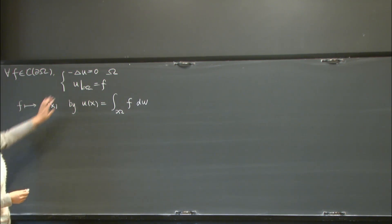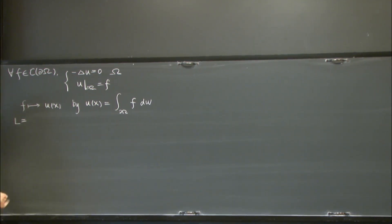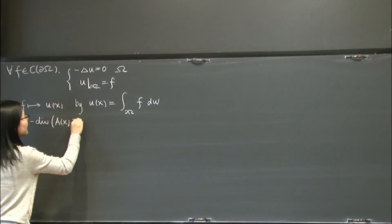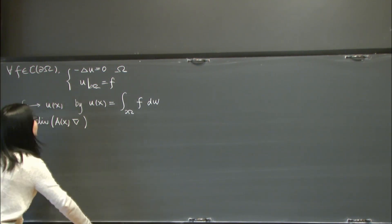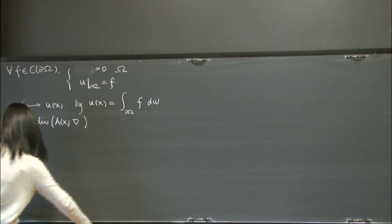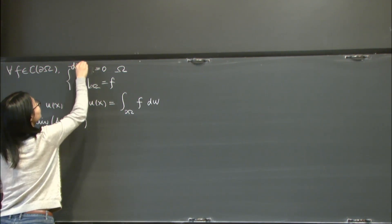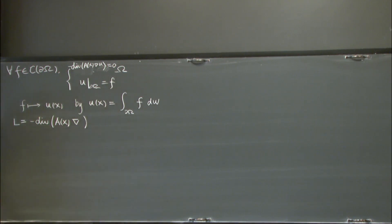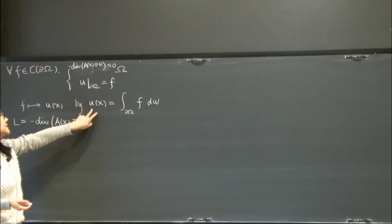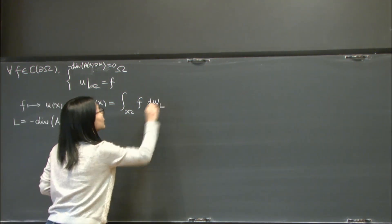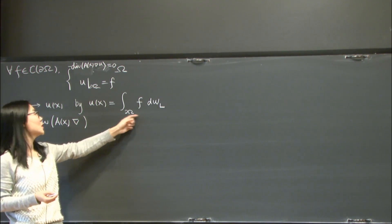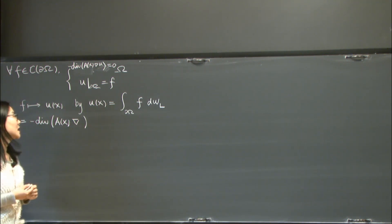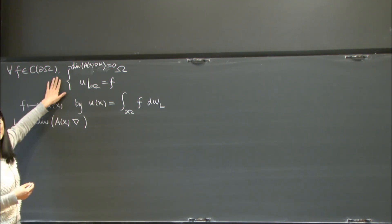More generally, instead of the Laplacian we can consider a divergence form elliptic operator L equals negative divergence of the elliptic matrix A(x) times gradient. Instead of the Laplacian equation, I consider a solution to this elliptic PDE. Similarly, we can define the elliptic measure as the measure for which integrating the boundary function gives the solution. Studying the properties of harmonic or elliptic measure gives us information about the boundary behavior of solutions to the elliptic problem.